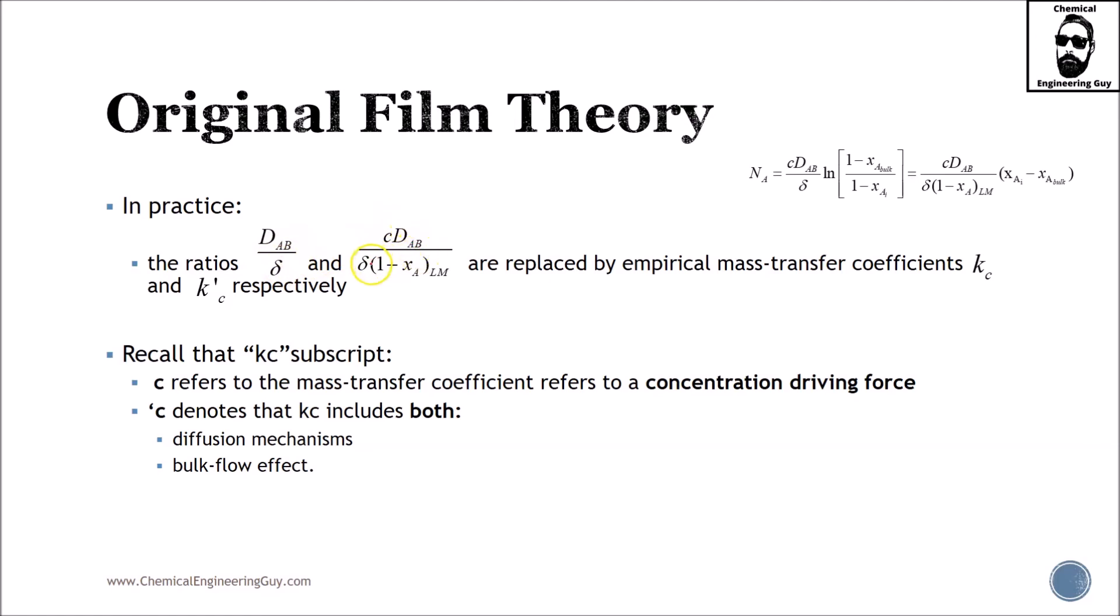The ratios of diffusivity of A and B divided by length are replaced by mass transfer coefficients kc and k'c. We're remembering how we model these films and why it's useful. The c stands for mass transfer with concentrations, and the apostrophe accounts for bulk flow effect, though in dilute cases this equals one.